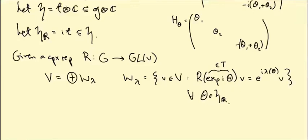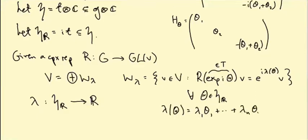This is for all big theta in H_R. Lambda is therefore a map from little H_R to R, because lambda of theta is really something like lambda_1*theta_1 + ... + lambda_n*theta_n, where the thetas are all real and the lambdas are going to be integers.